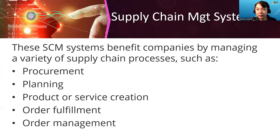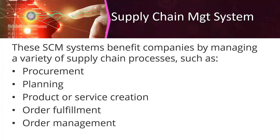Next in our topic is the Supply Chain Management system. Supply chain management is the management of flows of goods and services and includes all processes that transform raw materials into final products. It involves the active streamlining of a business's supply-side activities to maximize customer value and gain a competitive advantage in the marketplace. This SCM system benefits companies by managing supply chain processes such as procurement, planning, product or service creation, order fulfillment, and order management.